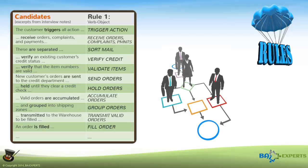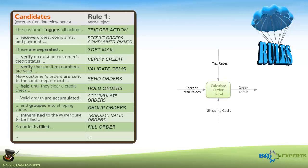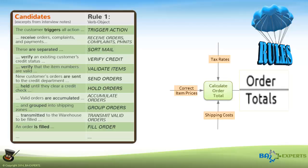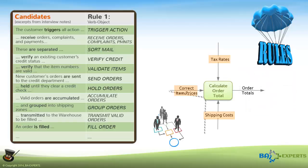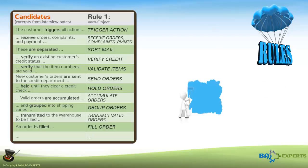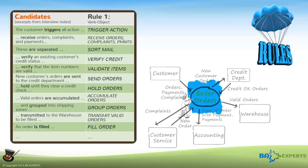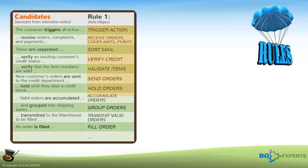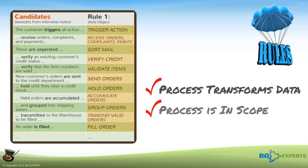First off, processes have to do something that will ultimately be represented in the form of data. In other words, a process transforms incoming data into outgoing data. If the action affects physical material, e.g. a shipment, the application will have to know something about the material. Secondly, what the process does has to be within the scope of the process I am analyzing — in this case, Enter Orders. Each action on my list that meets these criteria is a potential internal process that should show up on my lower level diagram of the Enter Orders process.